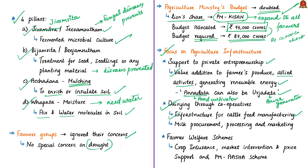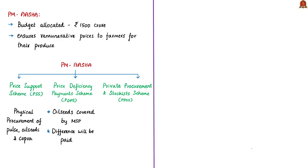Agricultural infrastructure emphasizing dairying through cooperatives shall be encouraged, to be done through creating infrastructure for cattle feed manufacturing, milk procurement, processing, and marketing. Agri infrastructure will be strengthened through farmer welfare schemes including crop insurance, market intervention, price support, and the PM ASHA procurement scheme — all of which got higher allocations than the last budget. However, farmers groups feel this fund will not be sufficient during agricultural crisis and water stress. They say the government should have allocated at least ₹50,000 crore under PM ASHA to guarantee procurement at MSPs, but currently the scheme has been allocated only ₹1,500 crore.